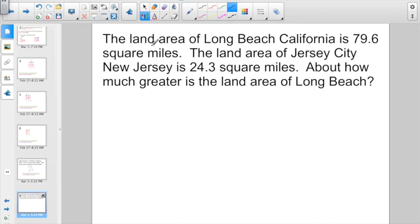And our last one on this pretty short and easy math lesson. The land area of Long Beach, California is 79.6 square miles. The land area of Jersey City, New Jersey is 24.3 square miles. Here is a clue word about how much greater is the land area of Long Beach. Turns out we have to do some rounding here. 79.6, because they don't want to know exactly how much larger. They want to know about how much larger. So, I'm going to round 79.6 to about eighty.